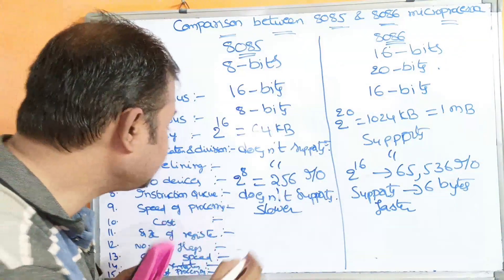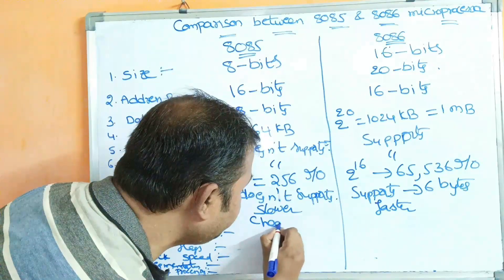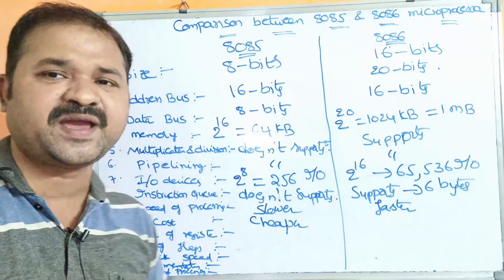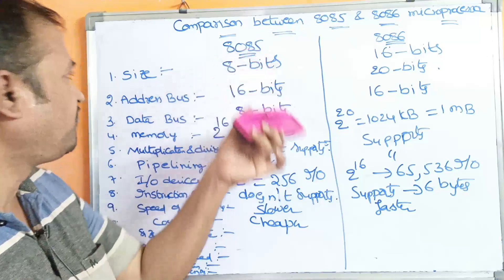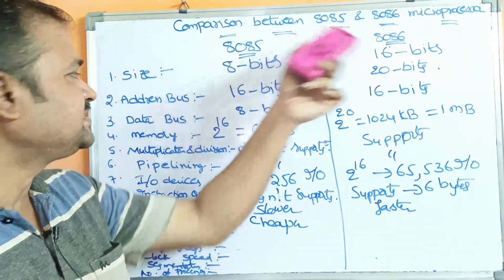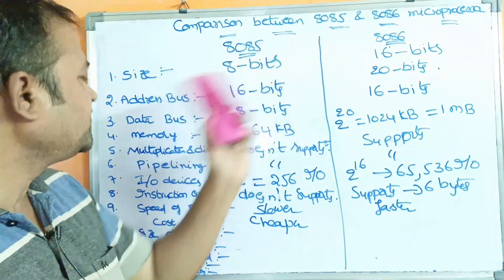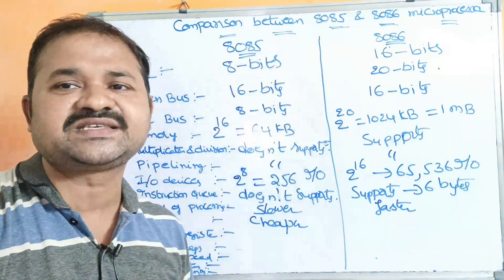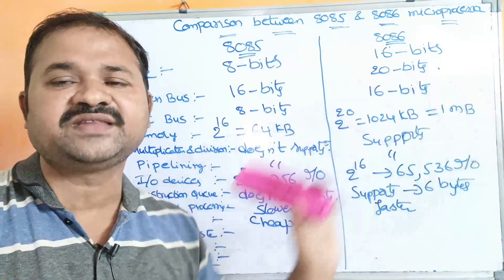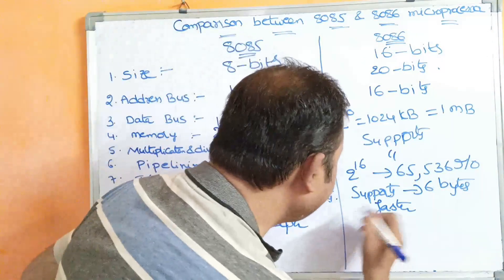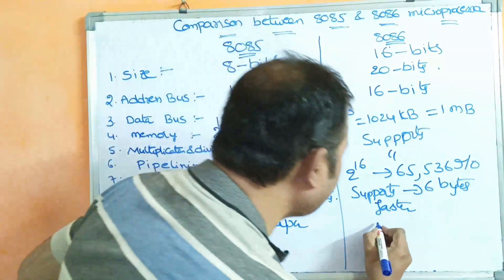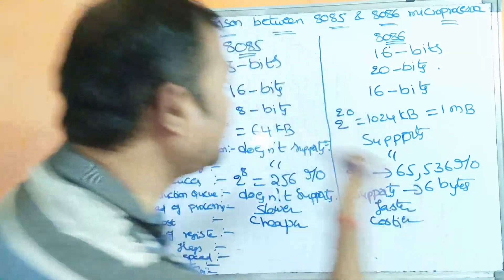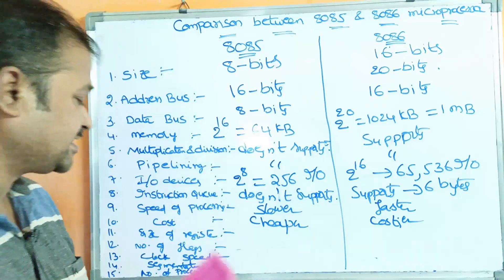The next characteristic is cost. The 8085 is very cheap compared to the 8086 microprocessor, because it has limitations — smaller size, smaller address bus, smaller data bus, and less memory capacity. Whereas the 8086 is somewhat more expensive than the 8085 microprocessor.